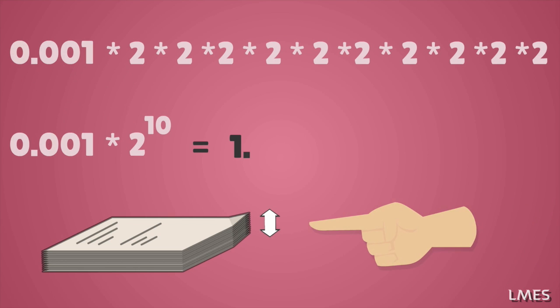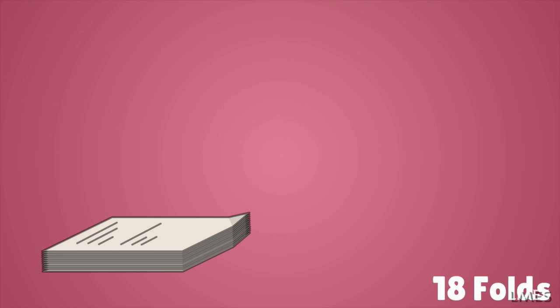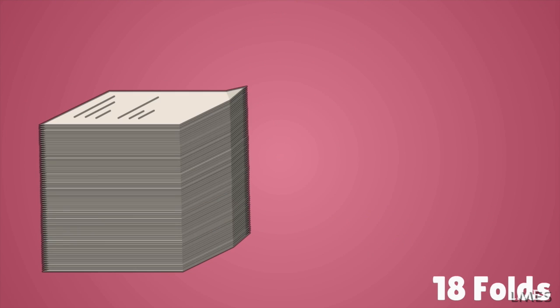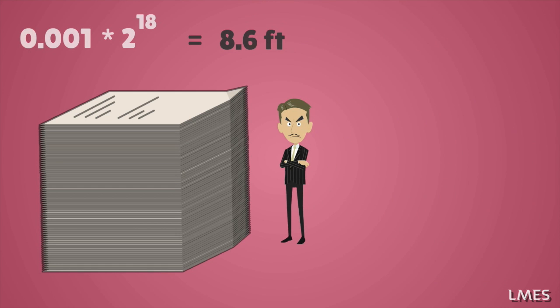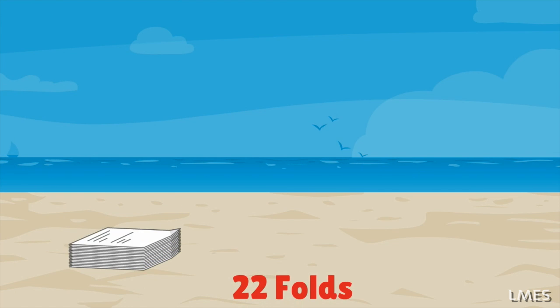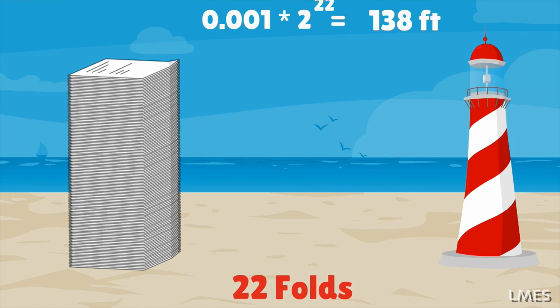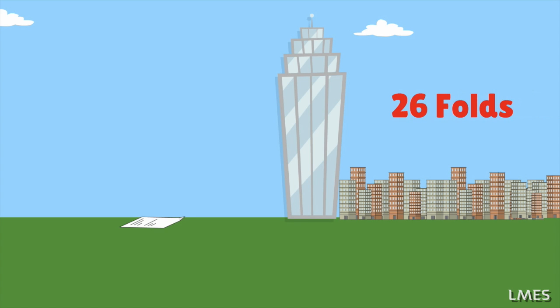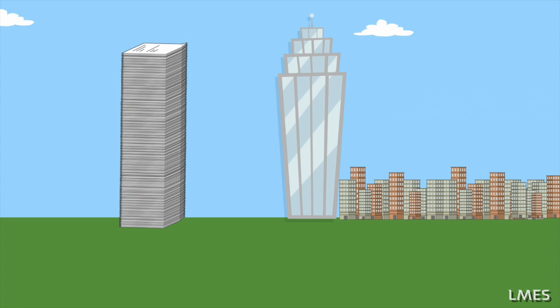The thickness of the paper folded 10 times is around 102 cm, around 3.4 feet. That's almost the thickness of the tallest man in the world. It's almost equal between 22 times fold. After 30 times fold, this equals the tallest building in the world.